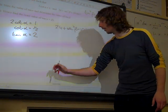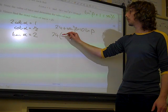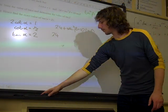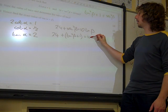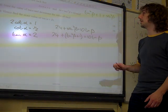And write this as being 24 lots of... Oh, 24 plus tan squared beta plus 1 is 10 tan beta.